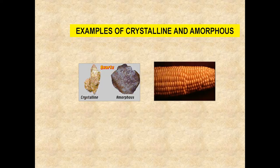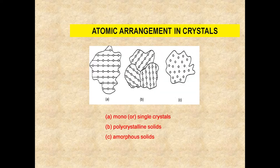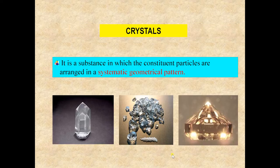The figure shown here illustrates a crystalline material, and another figure shows monocrystalline, polycrystalline, and amorphous solids side by side. The crystalline material has a regular shape and size with a systematic geometrical pattern. The figure of a diamond is also shown as an example of a crystal.